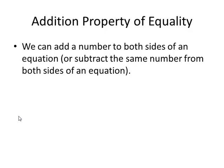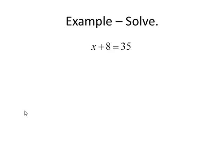The second thing that we need to know is the addition property of equality, which says that we can add a number to both sides of an equation, or we can subtract the same number from both sides of an equation. Whatever you do on one side, you do the same thing on the other side. The rest of the video will be devoted to examples.